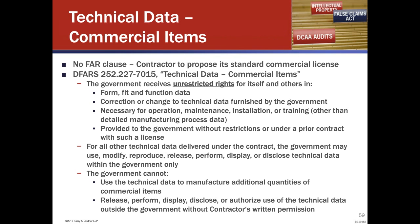There's no FAR clause for commercial item technical data. FAR 12.211 provides that the government shall acquire only the technical data and rights in that data customarily provided to the public with a specific commercial item or process. So when you go buy a hammer from Home Depot and it has an instruction manual, that is the type of information you provide to the public — you would provide that same information to the government. Whatever license the public has with respect to that manual, it's the same license the government would get.